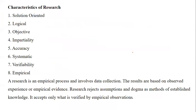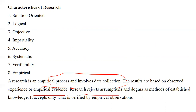Before that, a quick topic on characteristics, because characteristics questions appear repeatedly in exam cycles. These characteristics are related to research: it is solution-oriented, logical, objective, impartial, accurate, systematic, verifiable, and empirical. You get statement questions and are supposed to answer them. Research is an empirical process which involves data collection, resulting in findings based on observation or empirical evidence. Research rejects assumptions and dogma as methods of establishing knowledge — it only accepts empirical observations, that is field or real rational observation.